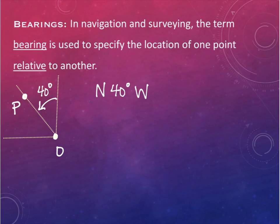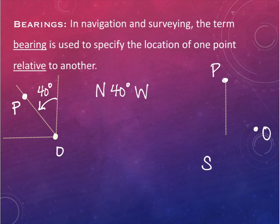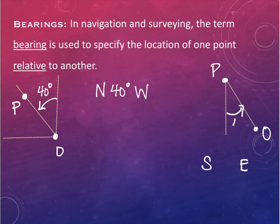For the reverse direction, going from P to O: now we go south and east. So this would be South 40 degrees East - the same points, opposite direction.